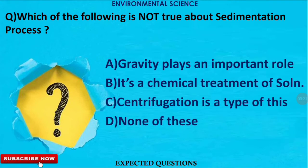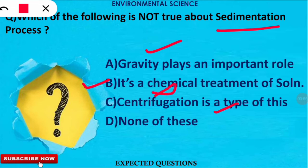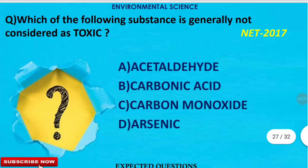The next question is: which of the following is not true about the sedimentation process? The correct option is option B. In sedimentation, gravity plays an important role — greater gravity speeds up the sedimentation process. Centrifugation is also a technique for sedimenting required elements, but it is not a chemical treatment; it is a physical treatment. So the option that is not true is option B.